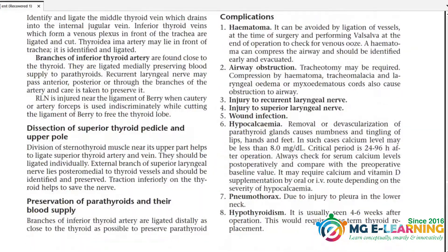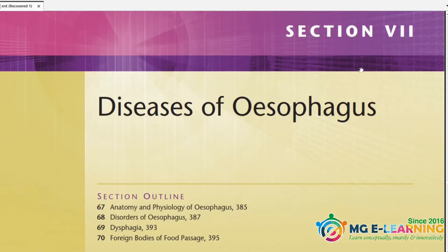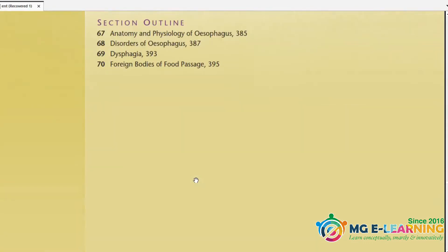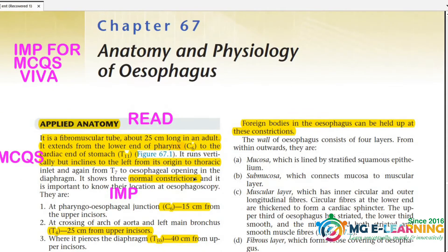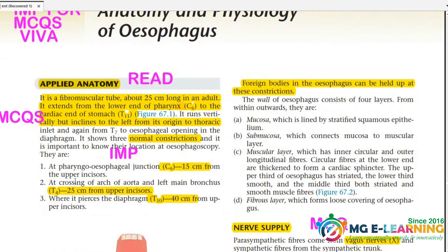Now let's start the important chapter: Section 7, Diseases of the Esophagus. This is an important section. Chapter 67 covers anatomy and physiology of the esophagus — this is important for MCQ and viva. Applied anatomy, including where the esophagus extends from and to, and measurements, are important MCQ topics.